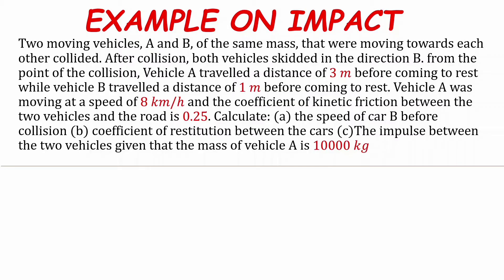Vehicle A was moving at a speed of 8 km per hour, and the coefficient of kinetic friction between the two vehicles and the road is 0.25. We are to calculate the speed of car B before collision, the coefficient of restitution, and the impulse between the two vehicles. Let's not forget that initially we said they have the same masses.